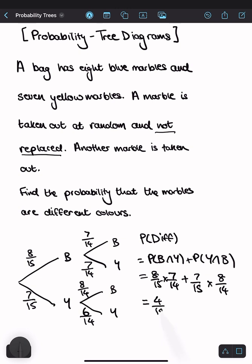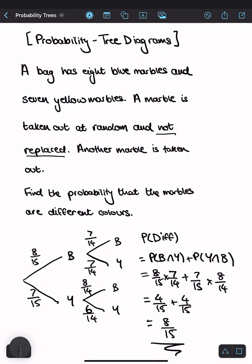Both of these give us four fifteenths. So now if we add these events, we get the probability of eight fifteenths. And that is the probability that the marbles are different colors.